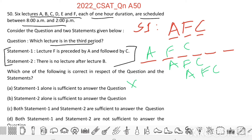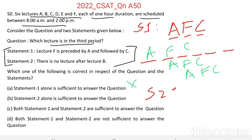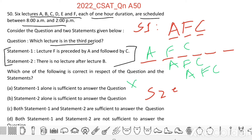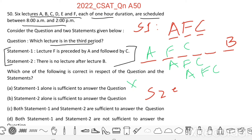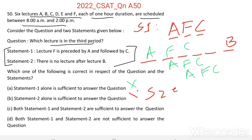Now let us see the second statement: There is no lecture after B. That means the last lecture in this six-hour period is B. So we place the last lecture as B. Then which is the third lecture based on the second statement? It can be any of the remaining five lectures. So based on statement two alone, we cannot answer the question. Therefore we can eliminate the second option as well.